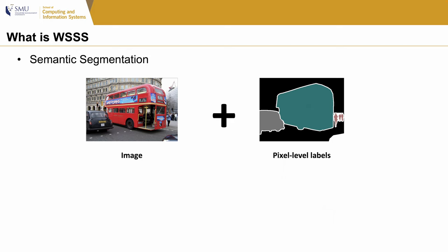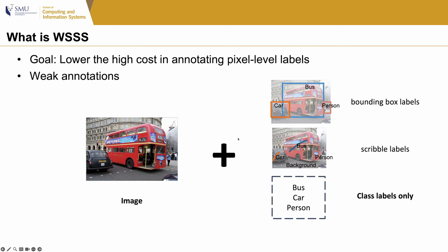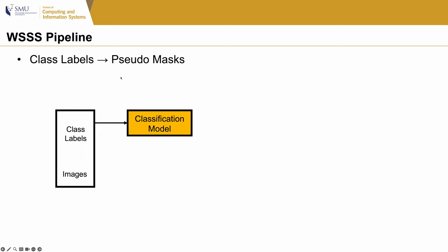First is the task: semantic segmentation. Semantic segmentation takes images with pixel-level labels to train a model to predict a class label for every image pixel. However, annotating pixel-level labels can be very time-consuming. For example, an image is hard to annotate when there are many overlapping objects. Weakly supervised semantic segmentation aims to lower this cost by using weak labels instead, such as bounding boxes, scribbles, and image-level class labels. The last setting is the most challenging and the most popular. The core problem is how to convert class labels to masks to train a fully supervised model.